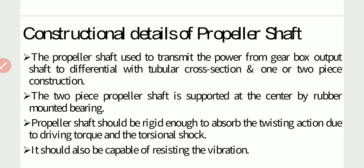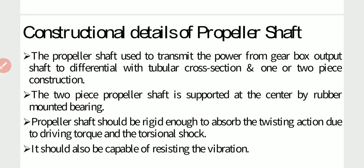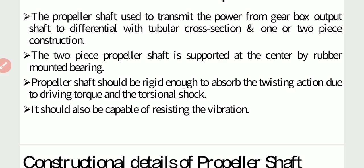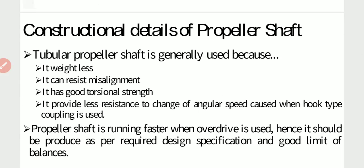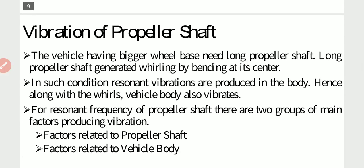Construction details of propeller shaft: the propeller shaft transmits power from the gearbox output shaft to the differential with a tubular cross section and one or two piece construction. The two-piece propeller shaft is supported at the center by a rubber-mounted bearing. It should be rigid enough to absorb twisting action due to driving torque and torsional shock, and capable of resisting vibration. A tubular propeller shaft is generally used because it weighs less, can resist misalignment, has good torsional strength, and provides less resistance to changes in angular speed. When overdrive is used, the propeller shaft runs faster, hence it must be produced to required design specifications and balance limits.